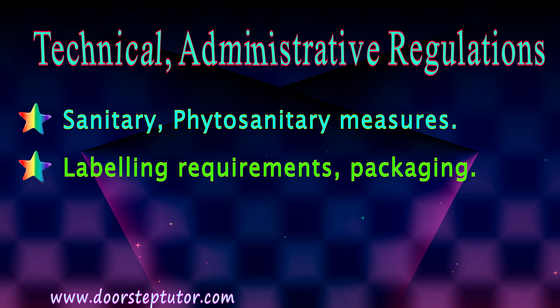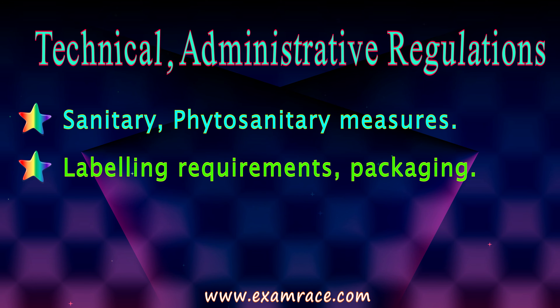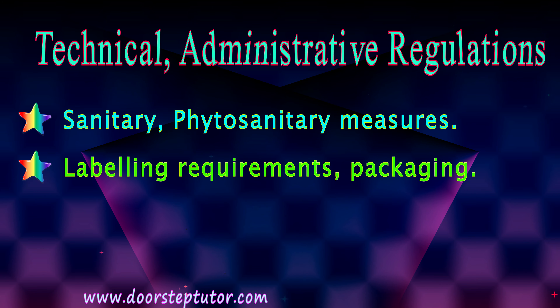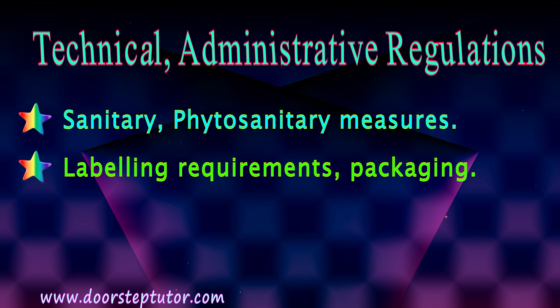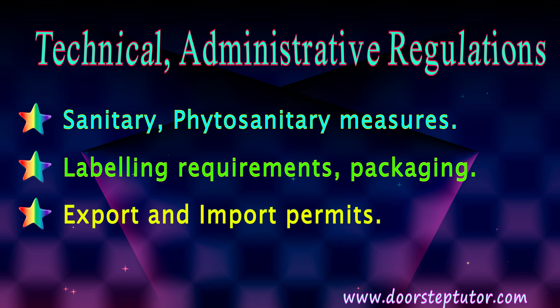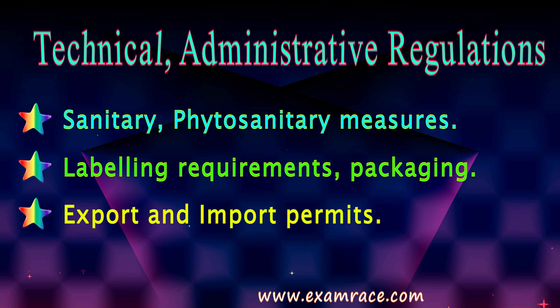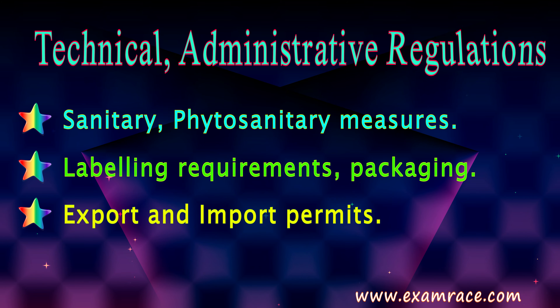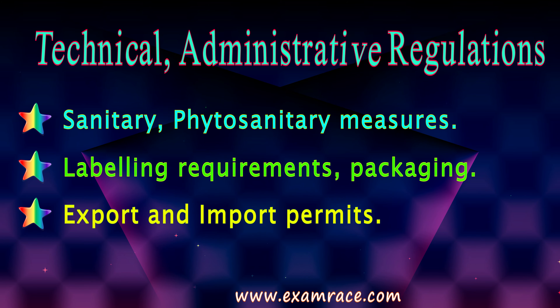Then we have labeling requirements and packaging. Here, guidelines are set requiring that when importing or exporting a food item, the packaging must meet certain standard units and criteria. With respect to labeling, manufacturing details — where the product was manufactured — and nutritional details must be mentioned. Then there are export and import permits, which are licenses given to certain exporters and importers to trade in specific commodities.